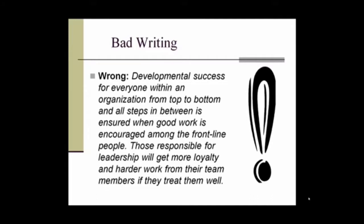Let's try our new skills by revising a sample of bad writing. Here it is: 'Developmental success for everyone within an organization from top to bottom and all steps in between is ensured when good work is encouraged among the frontline people. Those responsible for leadership will get more loyalty and harder work from their team members if they treat them well.' What a mess — even if you read this short paragraph several times, you may still not understand just what the message is. But this is how most people write, especially if they're not sure of what they're trying to say.